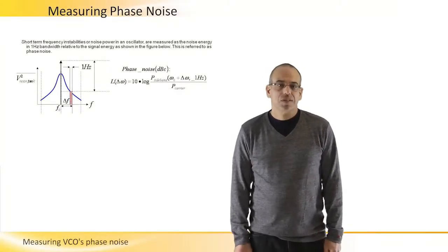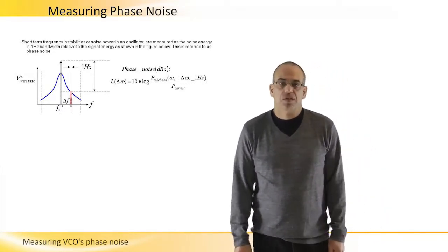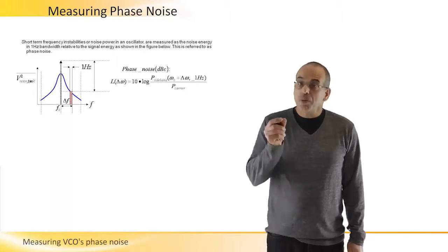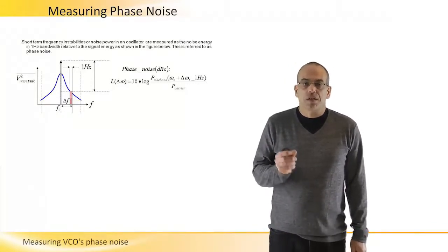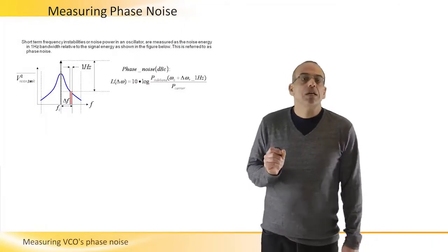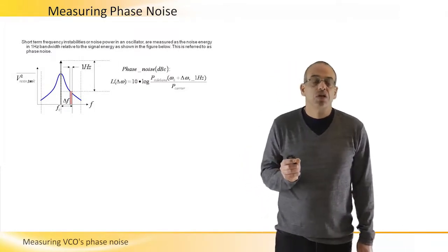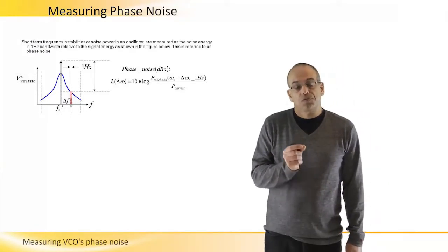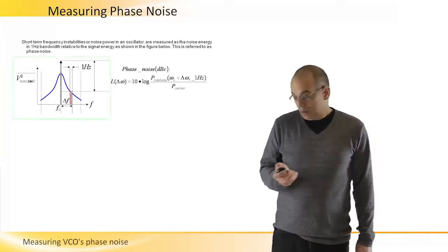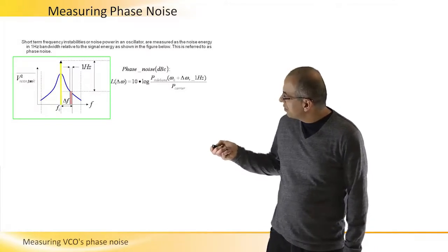Measuring phase noise or short-term frequency instabilities involves measuring the energy in a frequency band, usually one Hertz wide, and taking this energy and comparing or normalizing it to the energy of the signal at a center frequency. As we can see here, we have a physical signal with phase noise.